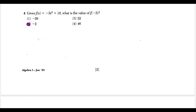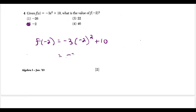If we do this by hand, f of negative two equals negative 3 times negative two squared plus 10. Make sure you write the negative number in parentheses before squaring — negative two squared is four. So we get negative 3 times positive 4 plus 10, which is negative 12 plus 10, giving us negative two. That's the correct answer.